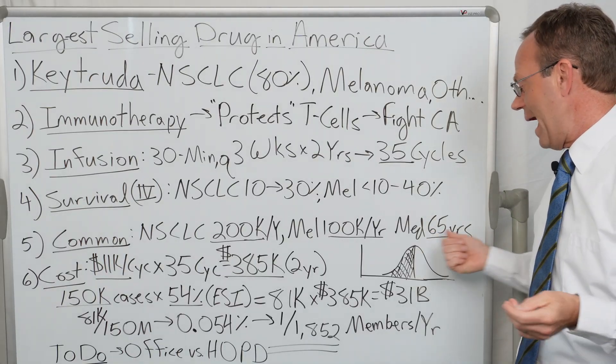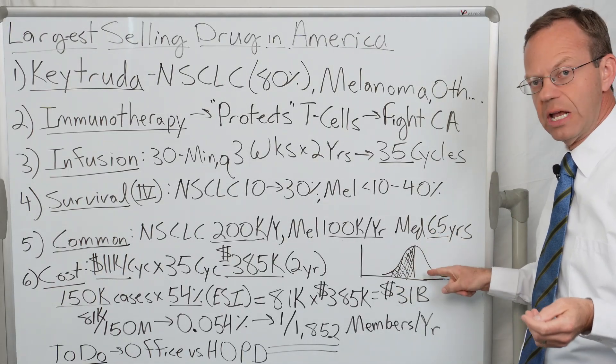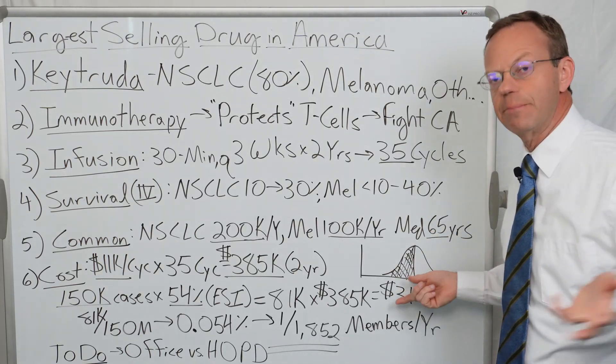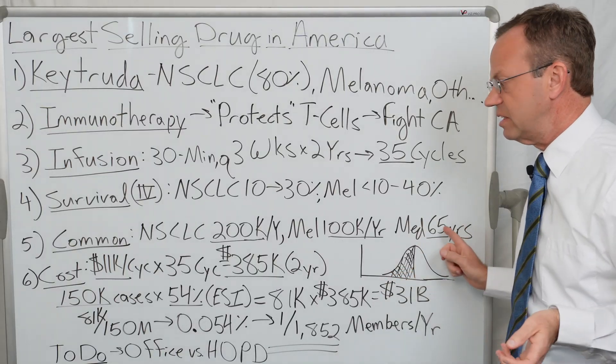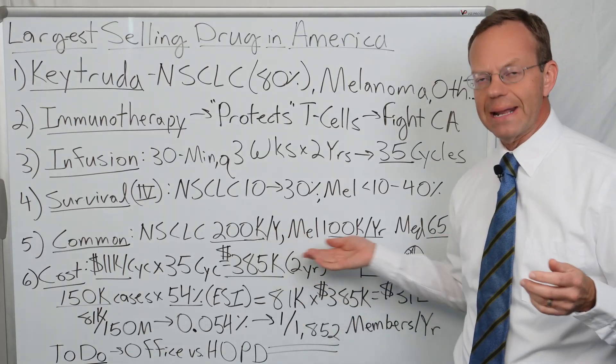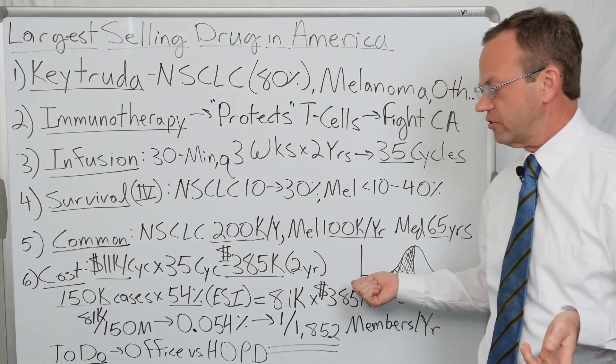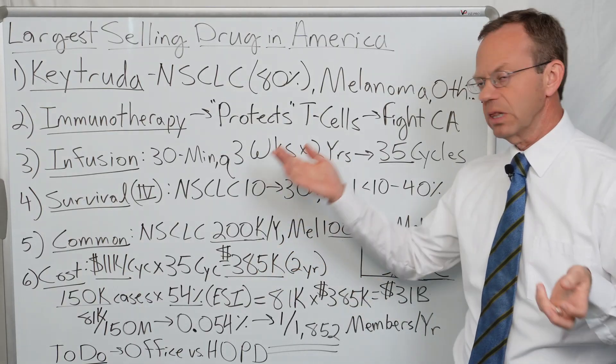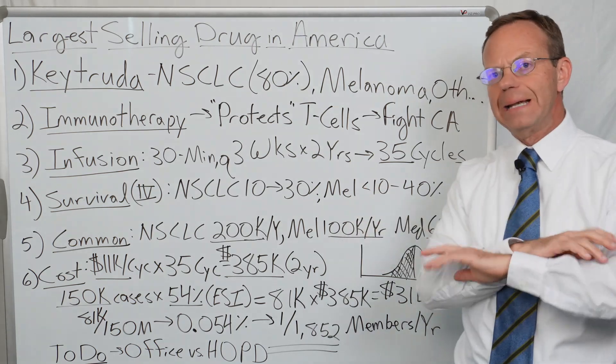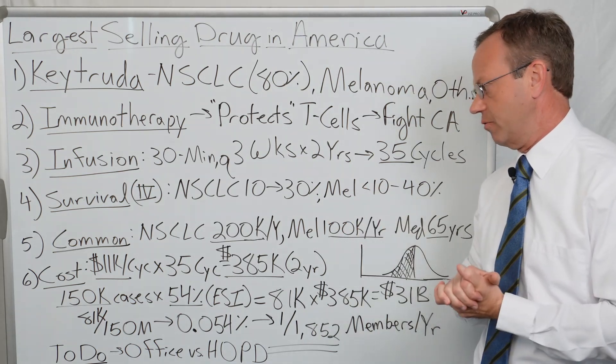About half the people are over 65 and half under 65. If they're over 65, it's largely going to be Medicare, either traditional Medicare or Medicare Advantage paying for it. If they're under 65, then about half the people with lung cancer and melanoma are not going to have Medicare paying for it.